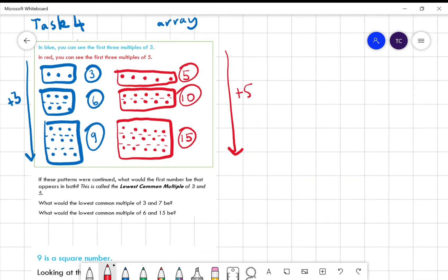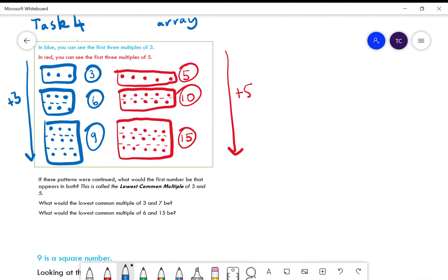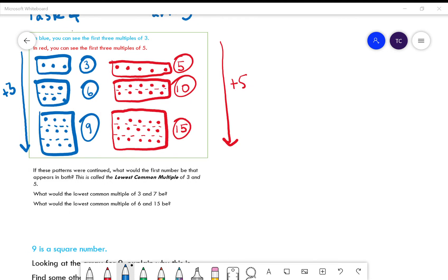I'm actually not going to bother drawing the arrays because maybe we can see another pattern here. We're adding three every time, so we've got 3, 6, 9.